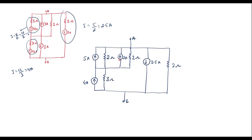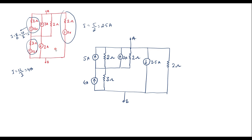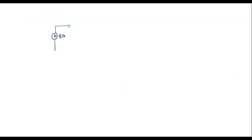Here these two are in parallel. The 5 amp and 3 amp current sources are in parallel and their directions are the same, so I can replace these two current sources by a single current source by adding the magnitudes. That is 5 amp plus 3 amp equals 8 amp. The two 2 ohm resistors are also in parallel; their equivalent value is 2 into 2 divided by 2 plus 2, which equals 1 ohm. I will replace them by a single resistor of 1 ohm connected in parallel.